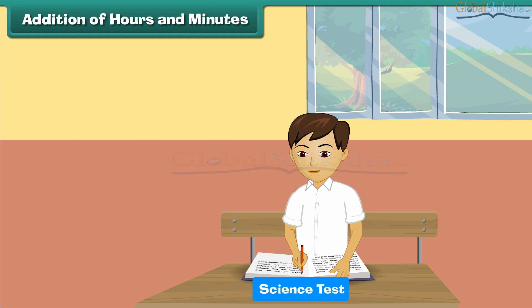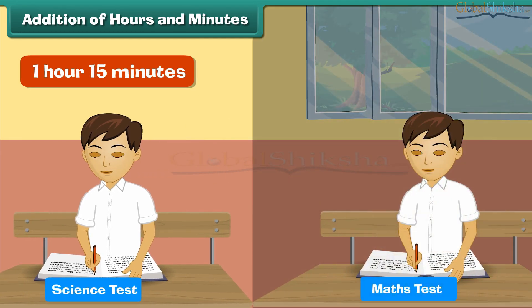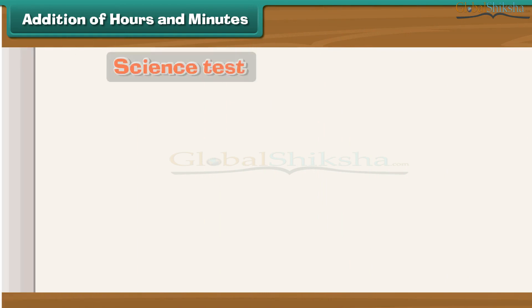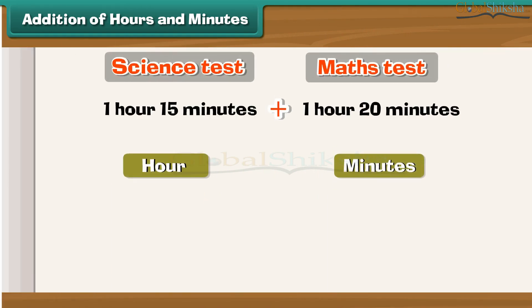Let us now learn to add two times. Raju completes his science test in 1 hour 15 minutes and his maths test in 1 hour 20 minutes. What is the total time taken by Raju to write the two tests? To calculate the total time, we add the hours together and the minutes together.